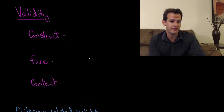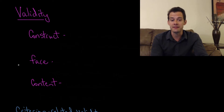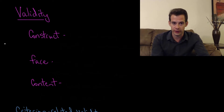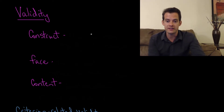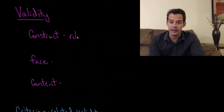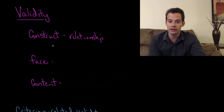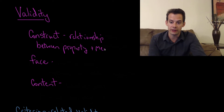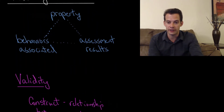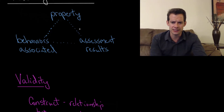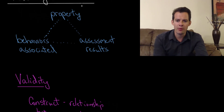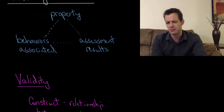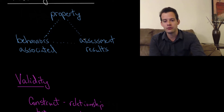The first type is construct validity, which I mentioned in the research methods unit. This is a fundamental type of validity — if you don't have it, there's really no point to doing your assessment. Construct validity refers to whether there is a clear relationship between the property and the assessment. For example, if I wanted to assess intelligence and my assessment was to ask your favorite color, we'd say there's not really a clear relationship between someone's favorite color and their intelligence — so it would have low construct validity.